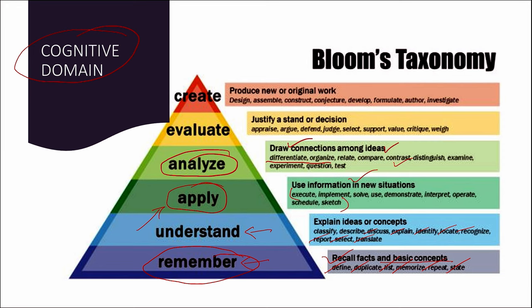As we climb above this pyramid, we reach the evaluation stage where we justify a stand or decision — where we critically appraise, argue, defend, judge, select, support, value, critique, and weigh the existing knowledge. As we climb up, we reach the top of the pyramid — that is, creating new knowledge in the cognitive domain.